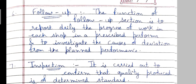The next function of production control is follow-up. The function of the follow-up section is to report daily the progress of work in each shop in a prescribed performa, and to investigate the causes of deviation from the planned performance. If there are deviations from the schedule, you have to find the causes because of which they are happening.